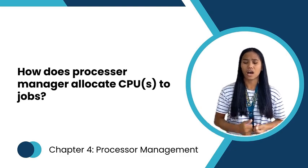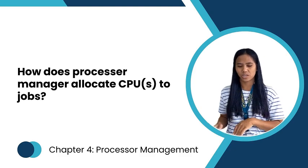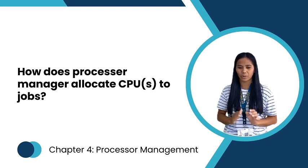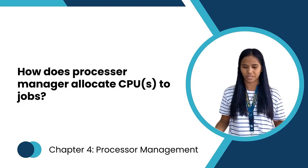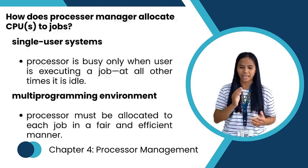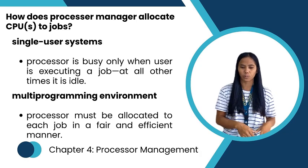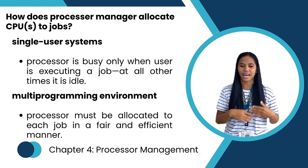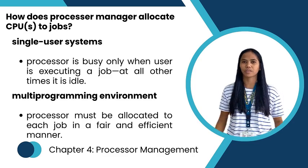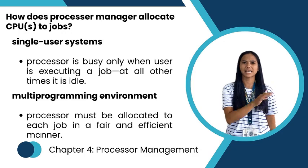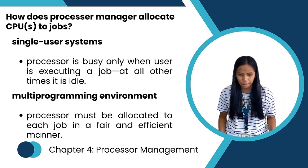How does processor manager allocate CPUs to jobs? The processor manager performs job scheduling, process scheduling, and network management. In a single-user system, the processor is basically idle when the user is not executing. In a single-user system, jobs enter one at a time.